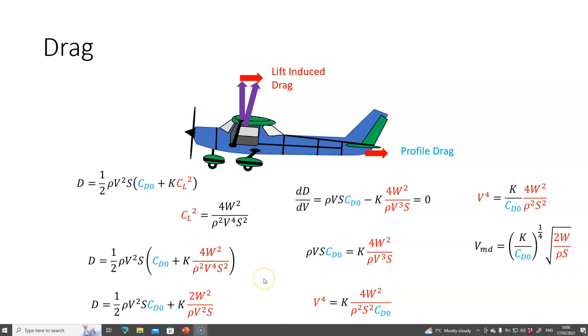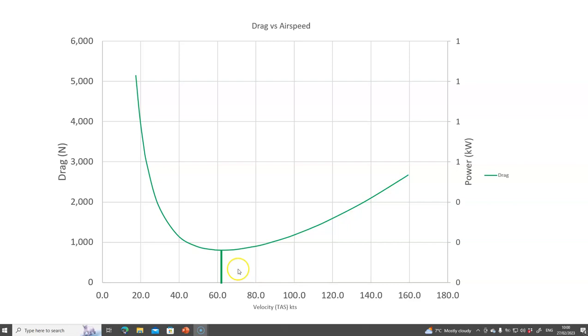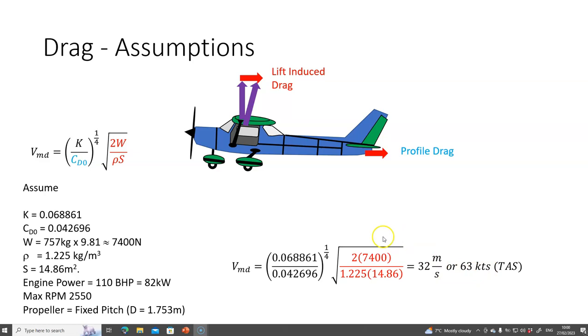I get something like this, and we can see that the minimum drag happens at about 63 knots, which is what we got.